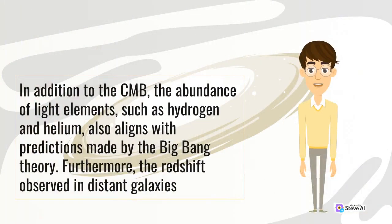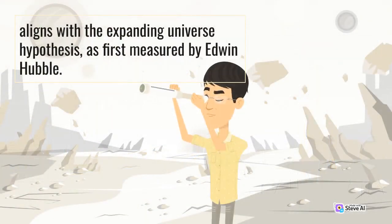In addition to the CMB, the abundance of light elements such as hydrogen and helium also aligns with predictions made by the Big Bang Theory. Furthermore, the redshift observed in distant galaxies aligns with the expanding universe hypothesis, as first measured by Edwin Hubble.